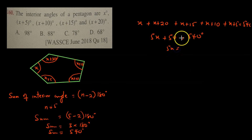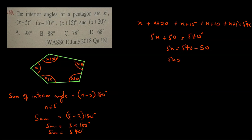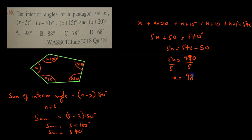So 5x plus 50 equals 540 degrees. Therefore 5x equals 540 minus 50, giving 5x equal to 490 degrees. Dividing through by 5, x equals 98 degrees.